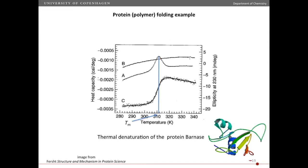Here I show an application of differential scanning calorimetry to protein denaturation or protein unfolding. The idea is you measure the heat capacity, which is this curve right here, as a function of temperature. The heat capacity goes through a maximum, which is the melting temperature where the protein unfolds and then goes back down. So at lower temperatures, the protein is folded, and at higher temperatures, the protein becomes unfolded. To understand this at a molecular level, I want to show a simple model that helps us understand this curve.